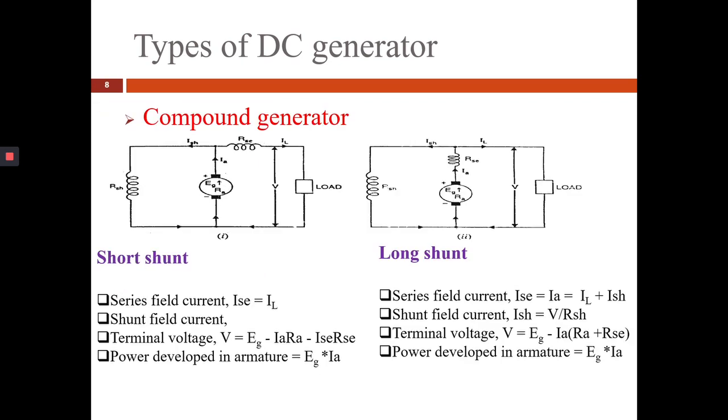Now we will see compound generator. Compound generators are of two types: short shunt and long shunt. In case of short shunt, the shunt field winding is parallel with the armature winding and both are in series with the series field winding. And in long shunt, the shunt field winding is parallel with the series field winding and armature winding.